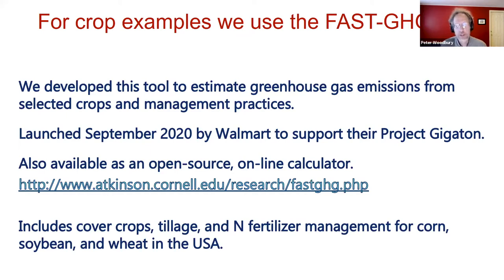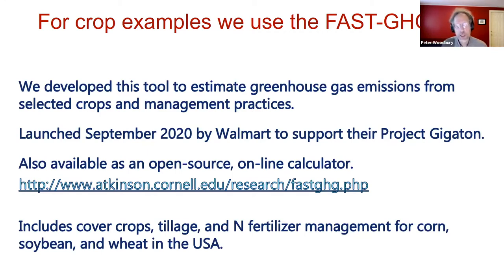The FAST greenhouse gas tool is something we developed to estimate greenhouse gas emissions from some of the most important commodity crops in the US and some of the most important soil health practices. This is available as an open-source online calculator at the website listed here. It includes cover crops, tillage, and nitrogen fertilizer management for corn, soybean, and wheat in the USA. It is important to recognize this as a national tool.